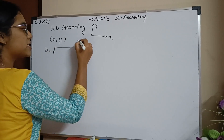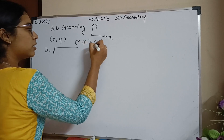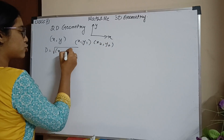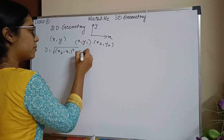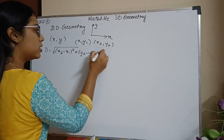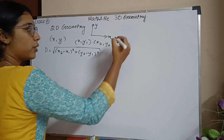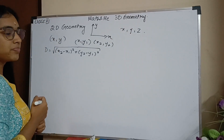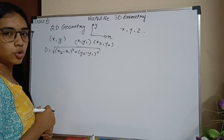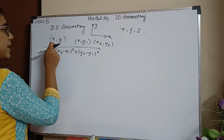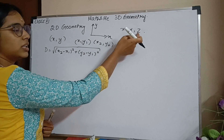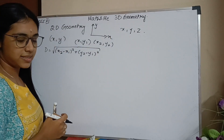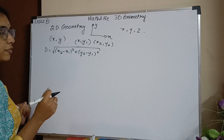In 2D learning with x and y coordinates, we saw the distance formula: when you have two points (x1, y1) and (x2, y2), the distance formula is √[(x2−x1)² + (y2−y1)²]. But now we are going to deal with three coordinates: x, y, and z. So you will no longer only have x and y — you now have a different axis, which is the z-axis.